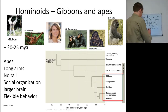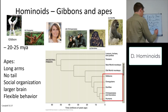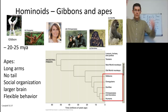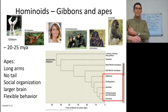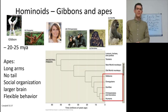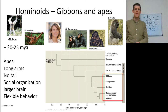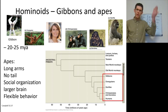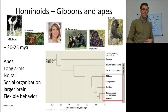Then you get the hominoids — the gibbons and the apes. The gibbons have not much of a tail. We all have relatively long arms compared to our body size, and little to no tail. They are very organized socially, and the brain keeps getting bigger compared to body size as you go up this group. Much more complex social behavior, including very flexible behavior — these are animals that are quick to learn. Long arms allow brachiating between things, especially for the arboreal ones.